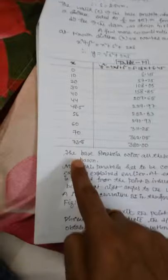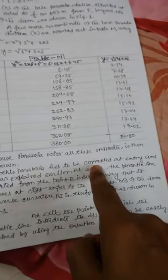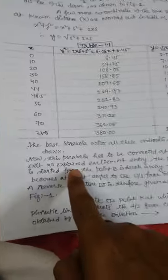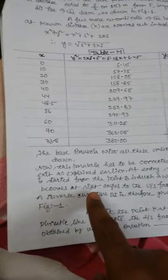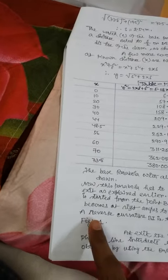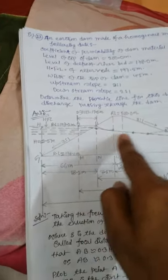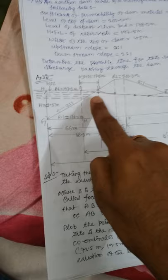So now the base parabola with all these coordinates is then drawn. Now this parabola has to be corrected at entry and exit as explained earlier. At entry the phreatic line is started from point B in such a way that it becomes at right angle the upstream face GB of the dam.